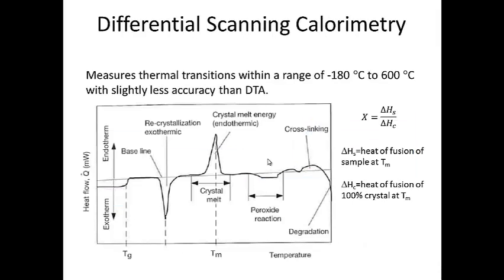Differential scanning calorimetry is a technique we've already talked about and it's a technique that's typically used to measure thermal transitions within a range of approximately minus 180 degrees Celsius or liquid nitrogen temperatures up to 600 degrees Celsius, and it's slightly less accurate than differential thermal analysis.